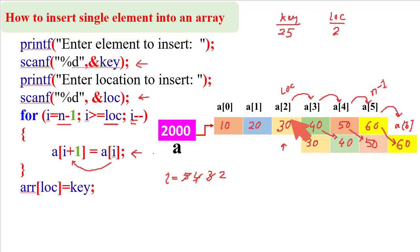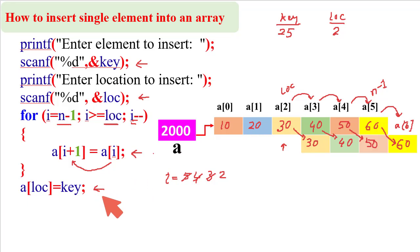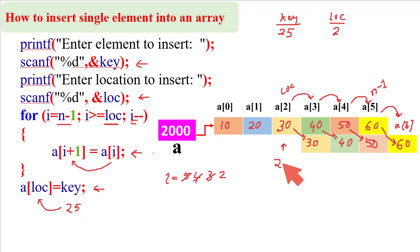Now we can enter the new value at the freed memory location. The new value is stored in the key variable (which is 25), and it is placed into the memory location defined by LOC (which is 2). So A[2] now holds 25. When we print the array, we get: 10, 20, 25, 30, 40, 50, and 60.